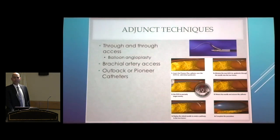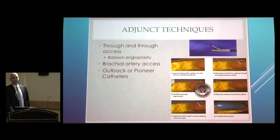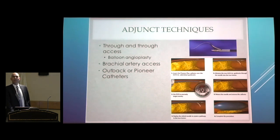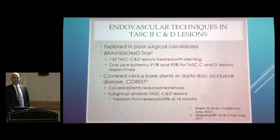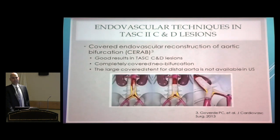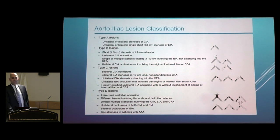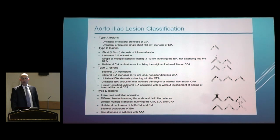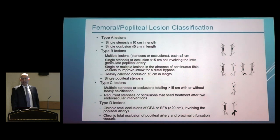There are many endovascular techniques, including through-and-through access and brachial artery access, which is very helpful in the aorto-femoral region — especially if the patient had previous kissing stents or aorto-bifemoral bypass, or the lesion cannot be crossed from below. Re-entry devices like the Outback or Pioneer catheter are available; the Pioneer has IVUS at the tip to direct needle re-entry. TASC classification categorizes aorto-femoral disease: TASC A and B are easier endovascularly, while C and D push the envelope — we try endovascular-first technique. A similar TASC classification applies to the femoro-popliteal region.